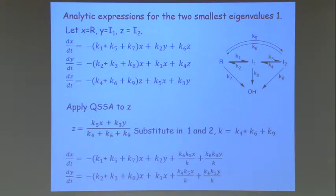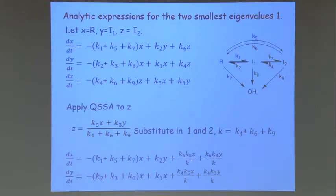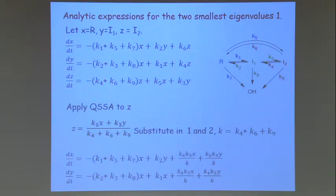Z equals (K5·x + K3·y) divided by (K4 + K6 + K9). That's a very common form for a QSSA result — the rate of formation divided by the sum of pseudo-first-order rate constants for its loss. We substitute this into the equations for x and y to get two new differential equations, reducing the system to a two-by-two matrix and a quadratic solution.